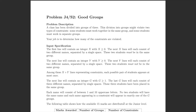Welcome back to the channel. Today we're going to be doing a walkthrough of problem J4 in the Canadian Computing Competition Senior 2022. This question is called 'Good Groups.' Let's read the description first: a class has been divided into groups of three, and there are constraints where some students must work together in the same group and some must be separated.